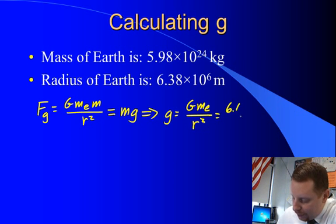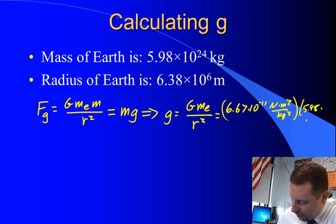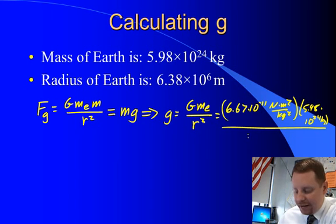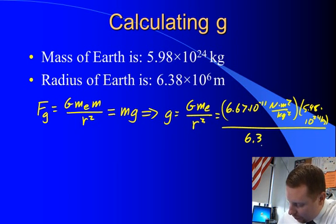That's 6.67 times 10 to the minus 11 Newton meters squared per kilogram squared times the mass of the Earth, which is 5.98 times 10 to the 24th kilograms, all divided by the square of the distance between them, which in this case is the radius of the Earth, center of the Earth to the object, 6.38 times 10 to the 6th meters squared.